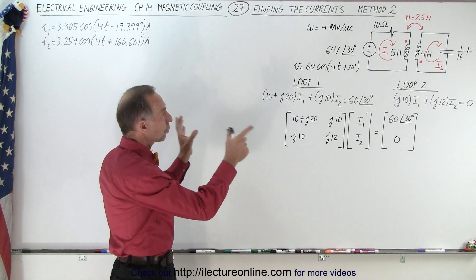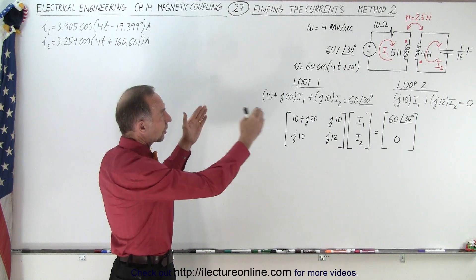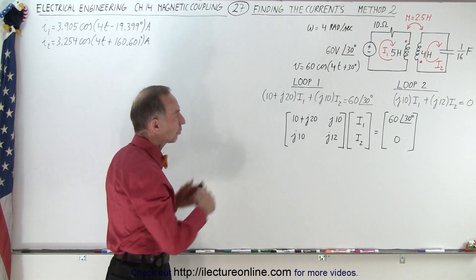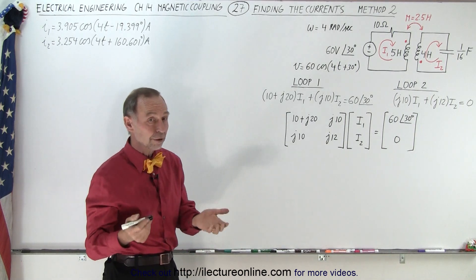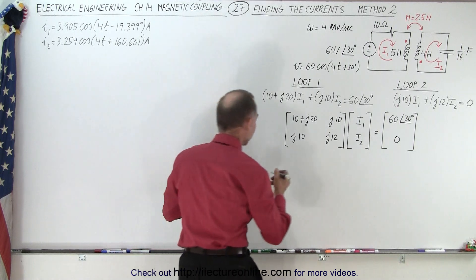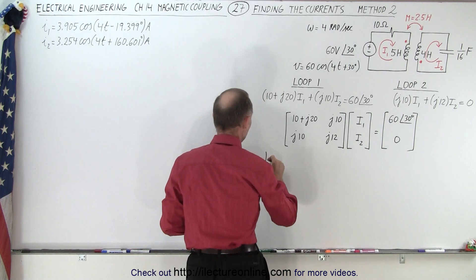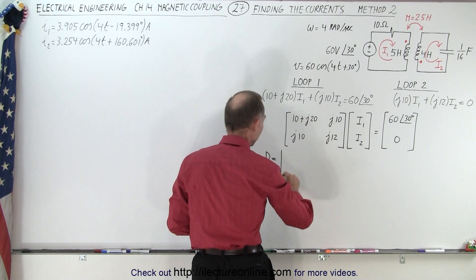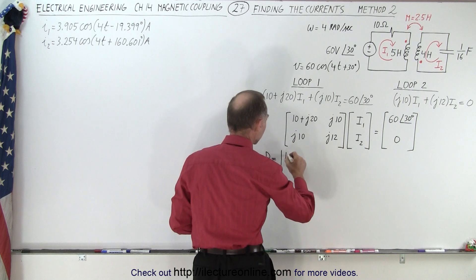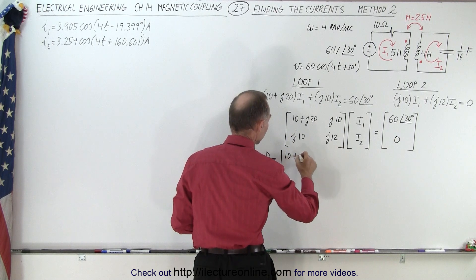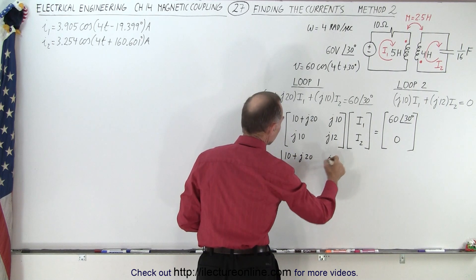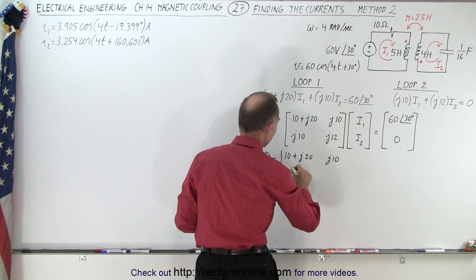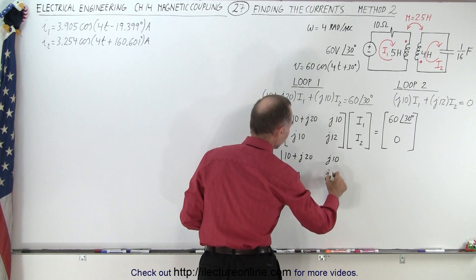If we take these two equations and put them into matrix format, this is what it looks like. And then to solve for the determinants, we do it as follows. We find the determinant, which is going to be equal to 10 plus J20. We have J10 here, J10, and J12.